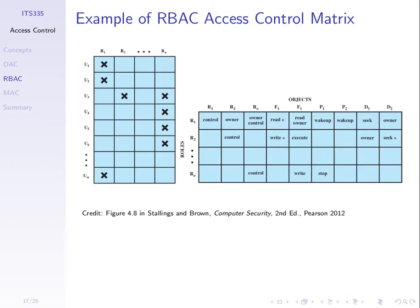For the access control, we define the access rights on objects—same as discretionary access control, but per role rather than per user. A particular file, for example, may be readable only by users in role 1. Another file may be readable and owned by users in role 1, and so on. This specifies access rights for objects by users in particular roles. This can make administration potentially easier, because you specify access rights per role rather than per user, and a role often contains multiple users.